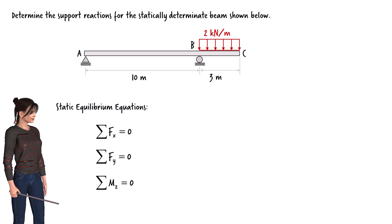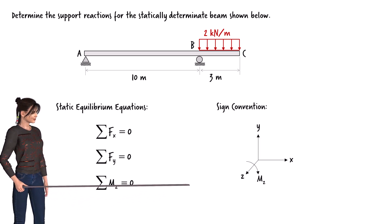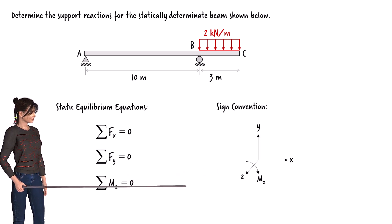To write the equilibrium equations we need to select a sign convention. This diagram shows the assumed positive directions of forces and bending moments.